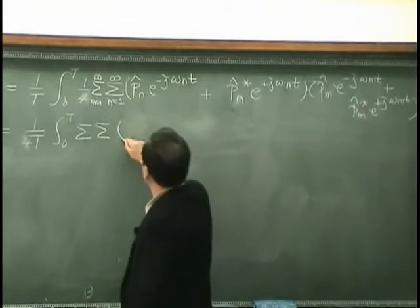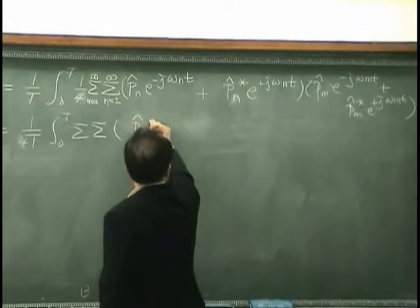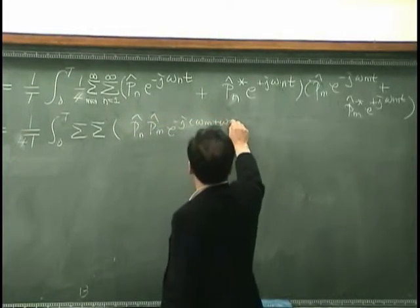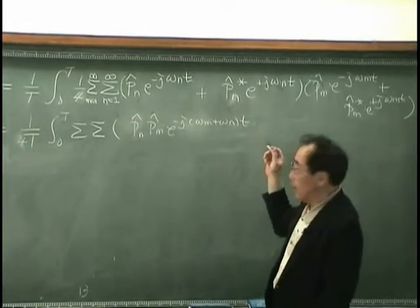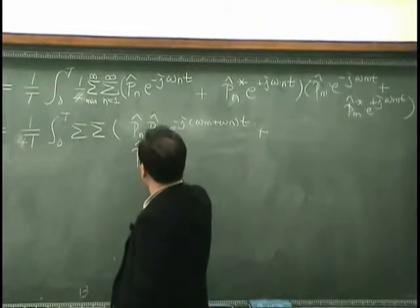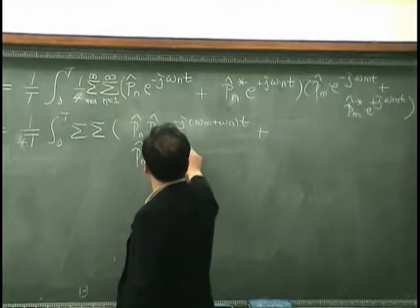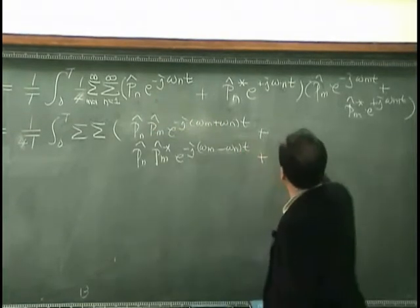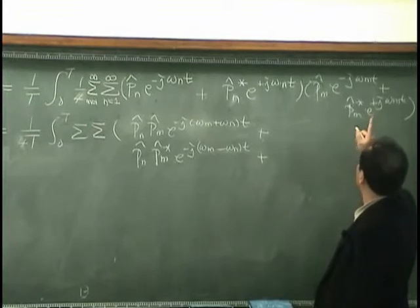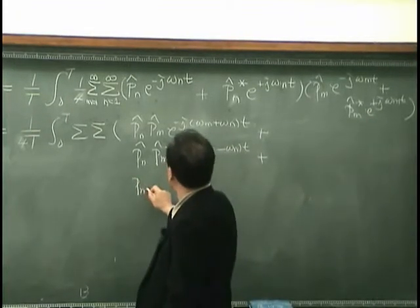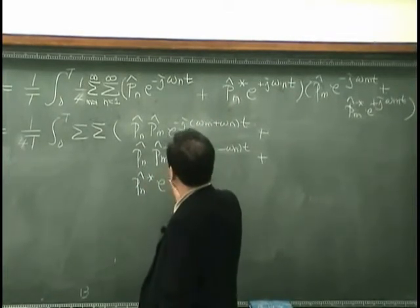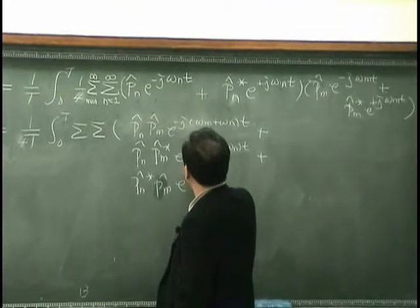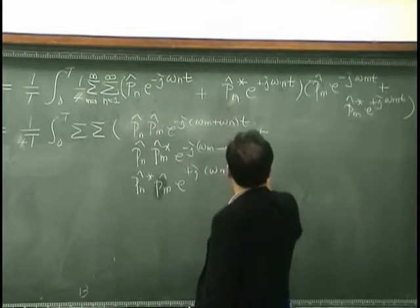What we have is Pn hat and Pm hat with the term e^(minus j(omega_m + omega_n)t), and I have the term Pn hat and Pm hat conjugate with e^(minus j(omega_m minus omega_n)t). And I multiply this together, giving Pn conjugate times Pm hat times e^(plus j(omega_m minus omega_m)t).